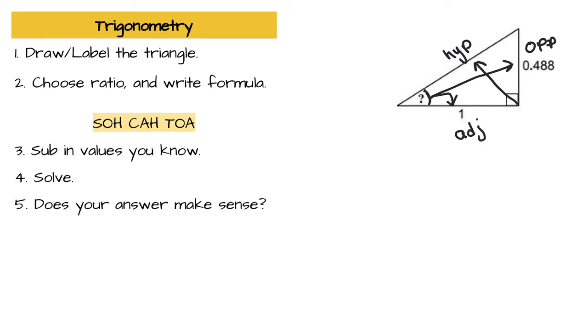And in this situation, since we're dealing with our adjacent and our opposite, we're going to choose our tan ratio. So we'll write that down. Tan theta is equal to opposite over adjacent. This step is really important to write out because it helps keep you organized when you're inputting the information that you have.